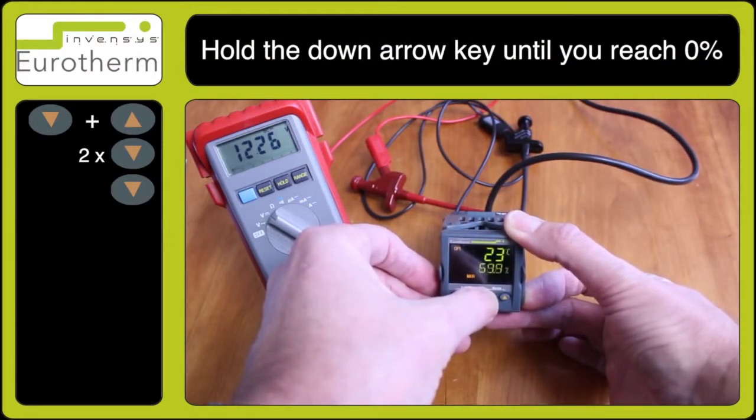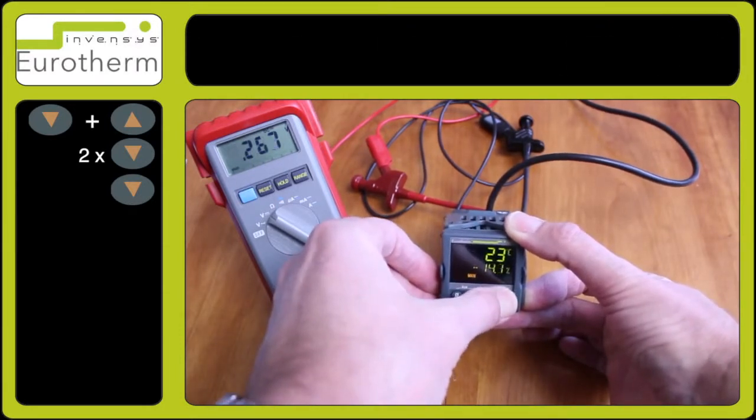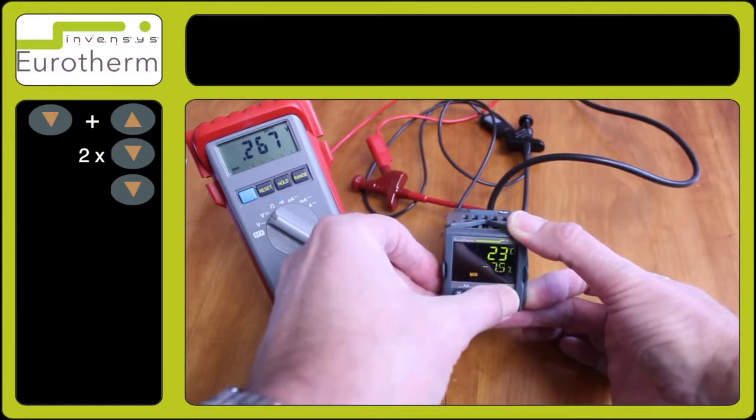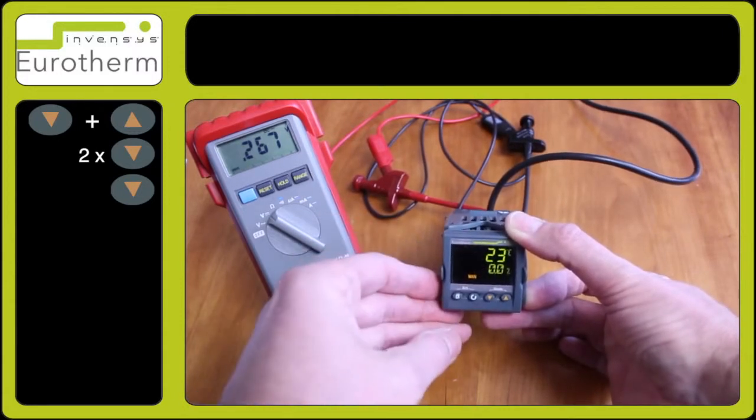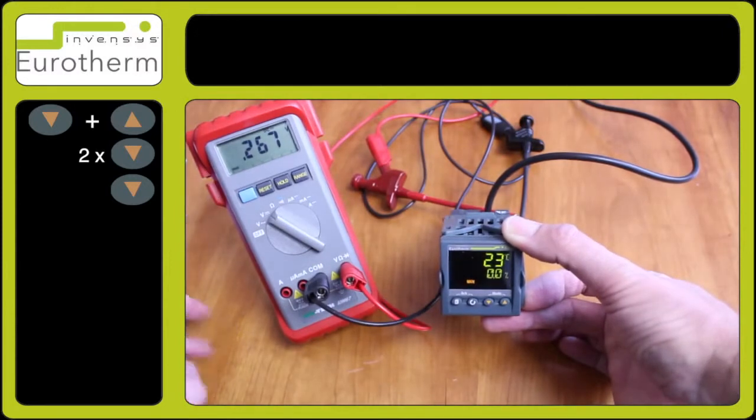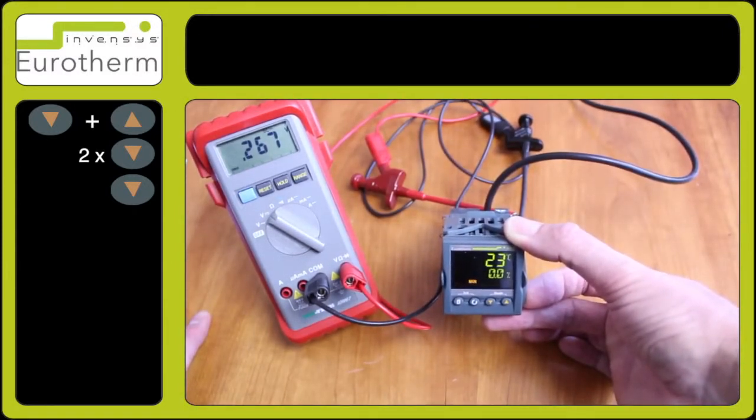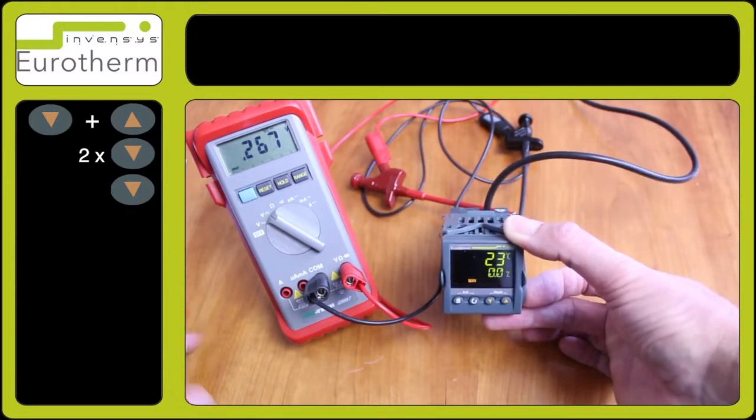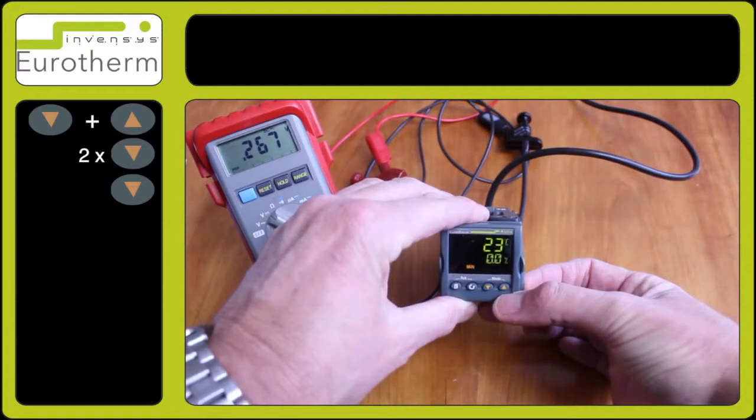The logic output has now collapsed and gone to 0.2 of a volt which means that this particular output is functioning correctly. To return back to your auto selection press the two arrow keys together and reselect auto for normal operation.